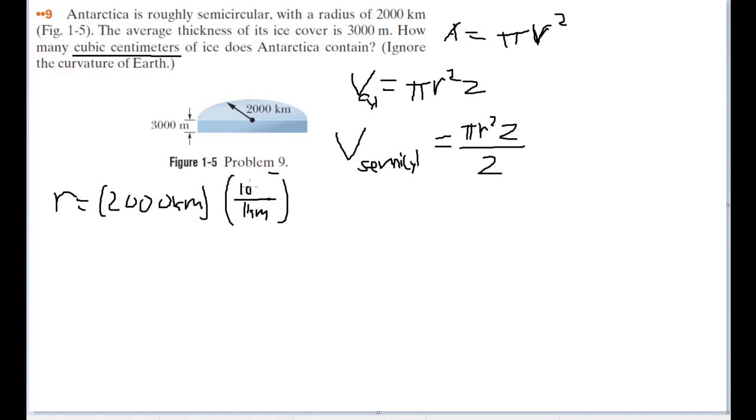So, it's 1 kilometer is 10 to the 3rd meters. And to convert from meters to centimeters, that's 1 meter to 10 to the 2, 10 squared centimeters. And all that is going to be equal to about 2,000 kilometers times 10 to the 5th centimeters.